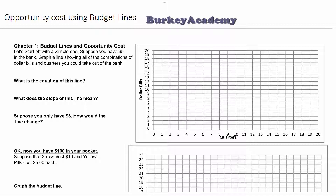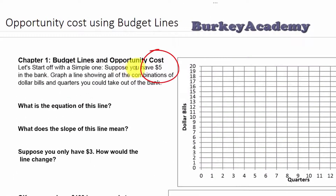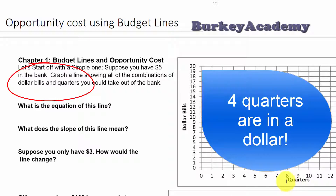With a budget line, what we're trying to do is map out graphically the amount of two different things that you could have, and to calculate and visualize how much of one thing you give up when you decide to get more of the other. In this first example, I'm going to go through something kind of silly — not a typical budget line. We're going to imagine that you have $5 in the bank, and we're going to talk about various ways you might pull that money out — in quarters or in dollar bills.